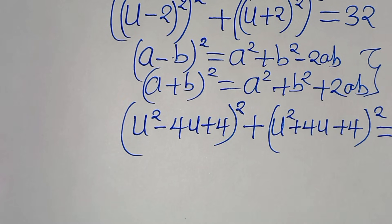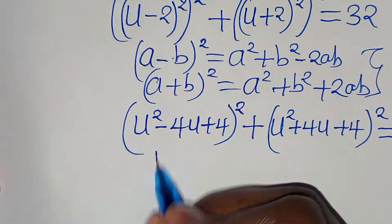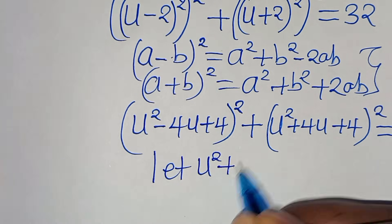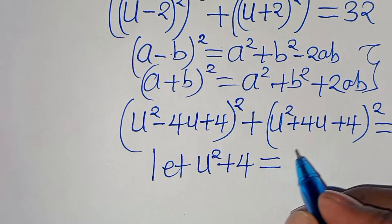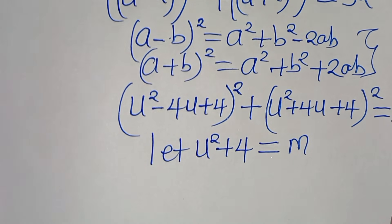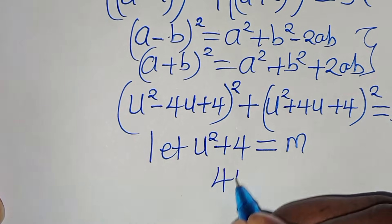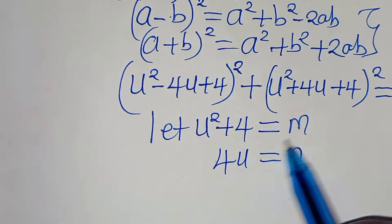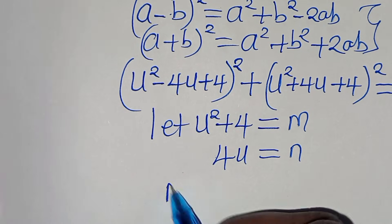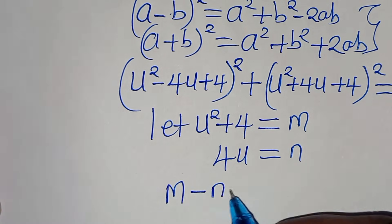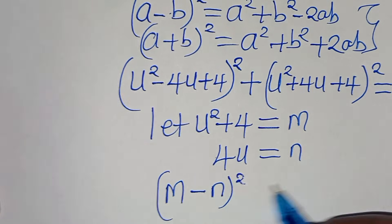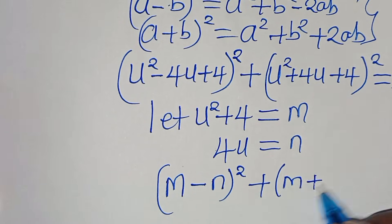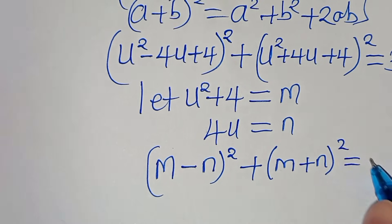Now we let m equal u squared plus 4, and we let n equal 4u. Substituting m and n, we have m minus n, raised to the power of 2, plus m plus n, raised to the power of 2, this is equal to 32.